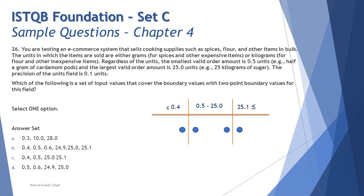Let's look at the table. 0.4 or less is unacceptable, 0.5 to 25.0 is valid range, and 25.1 or greater is invalid. The boundary values are closer to the boundaries: left boundary, left boundary minus one, right boundary, right boundary plus one. All the values mentioned on top are your boundary values.